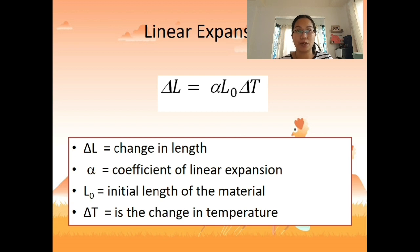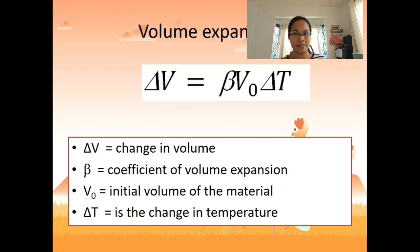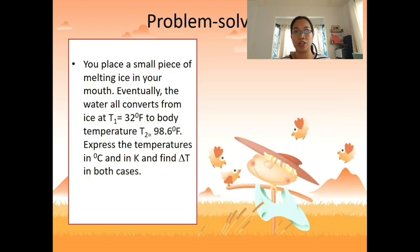Linear expansion is described by: ΔL = α · L₀ · ΔT, where α is the coefficient of linear expansion, L₀ is the initial length, and ΔT is the change in temperature, which can be expressed in °C or Kelvin. For volume expansion: ΔV = β · V₀ · ΔT, where β is the coefficient of volume expansion and V₀ is the initial volume.